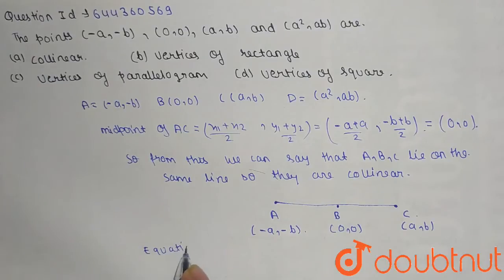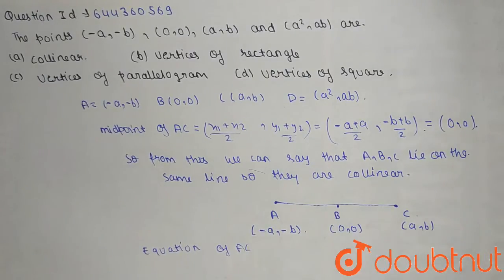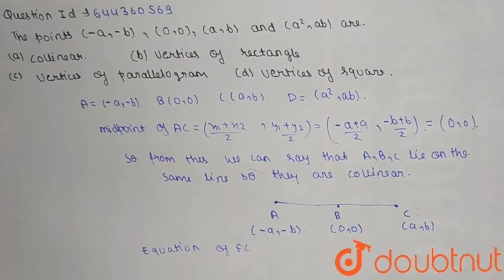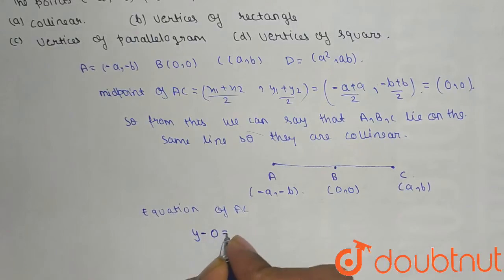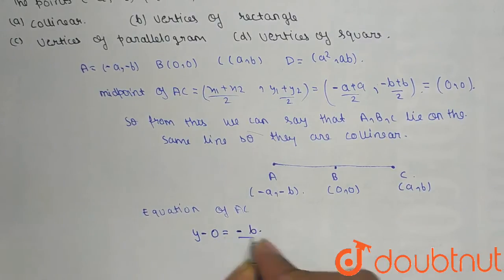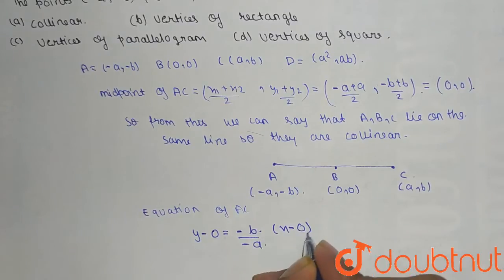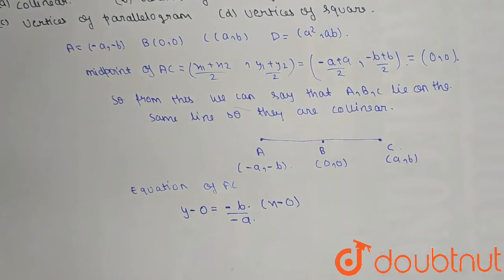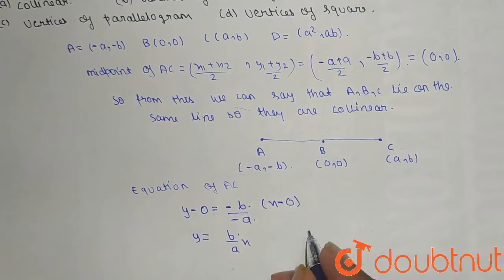Equation of AC is equal to: y - 0 = (0 - (-b))/(-a - 0) × (x - 0). So from here y = (b/a)x and we have given D coordinate = (a², ab).